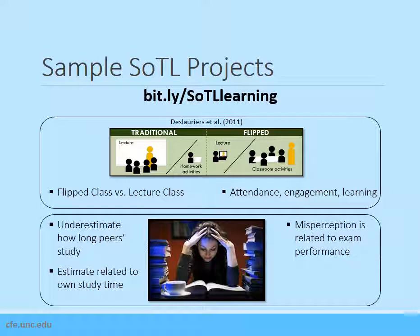What was interesting is that this misperception was related to their exam performance. But fortunately, a quick norm-correcting intervention — telling students how long their peers actually studied — eliminated this relationship and improved exam scores. Again, this is not a perfect project by any means, but it is an example of how SOTL projects can test factors related to the classroom that aren't necessarily directly related to learning.